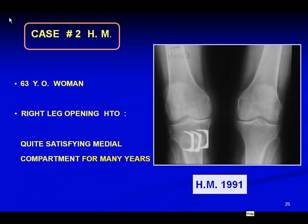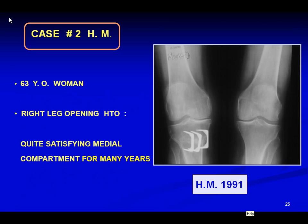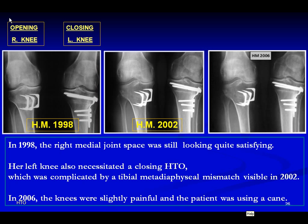The second case is a 63-year-old woman with a right leg opening HTO that gave quite satisfying medial compartment preservation for many years. In 1999 the right medial joint space still looked satisfying, but her left knee also necessitated a closing HTO, complicated by tibial metadiaphyseal mismatch visible in 2002. Four years later, the knees were slightly painful and the patient was using a cane. The third case involved tibial diaphyseal malalignment with painful right medial osteoarthritis — a closing HTO gave good clinical results but there was recurrence of joint space narrowing.